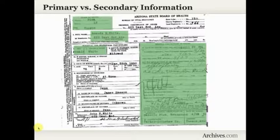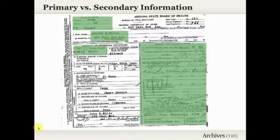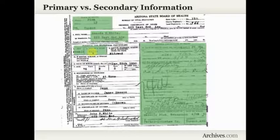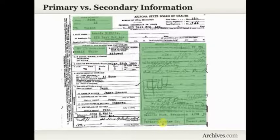The areas highlighted in green are primary information — it's information about the death, because the purpose of the death record is to record that information about the death. So the place of death, the person's name, perhaps their residence, their gender, and their color or race. Then the information about the death itself: the date of death, the cause of death, and probably the cemetery as well as the name of the undertaker. That's all information about an event that just happened, being given by people who should know what they're talking about.